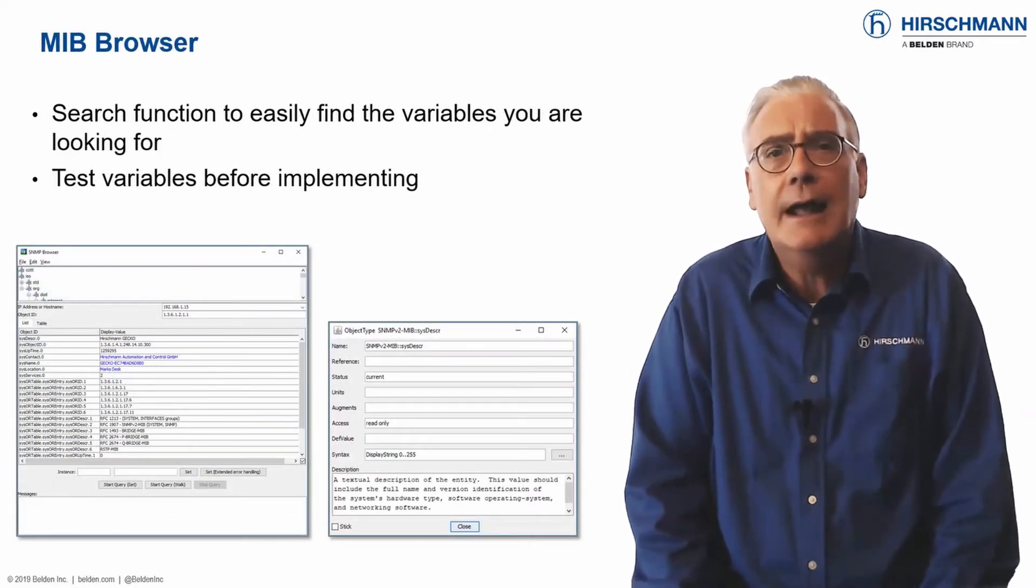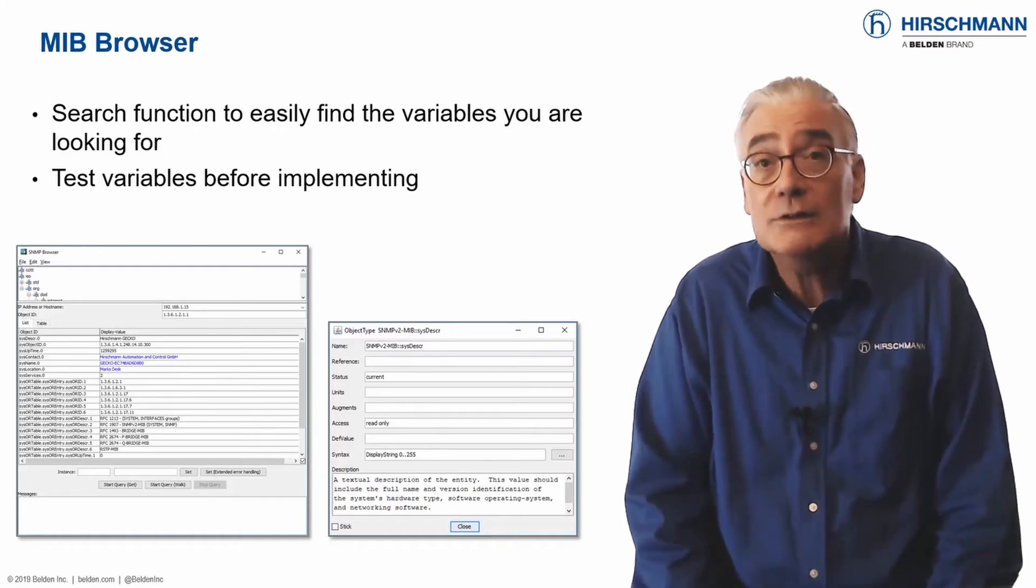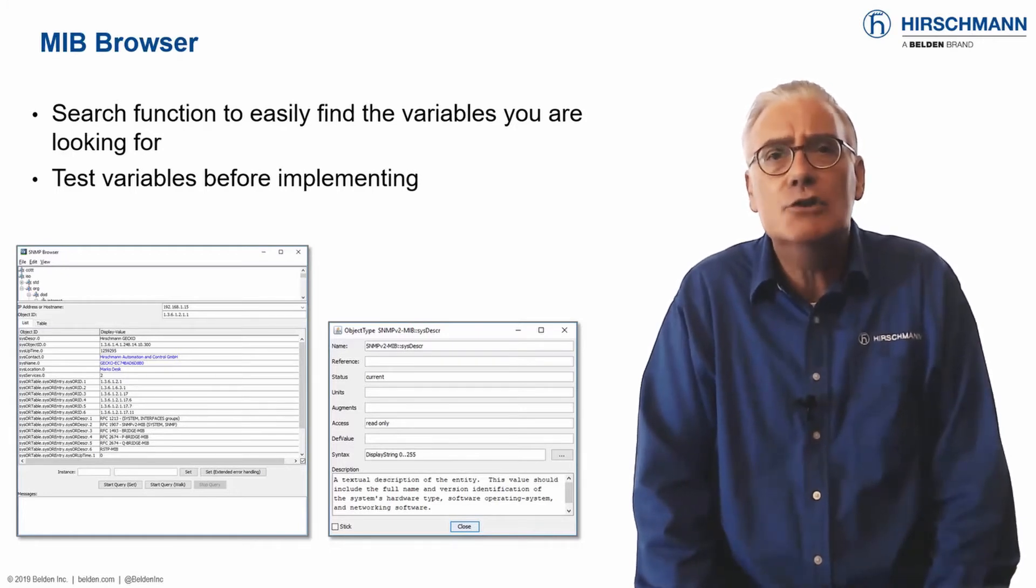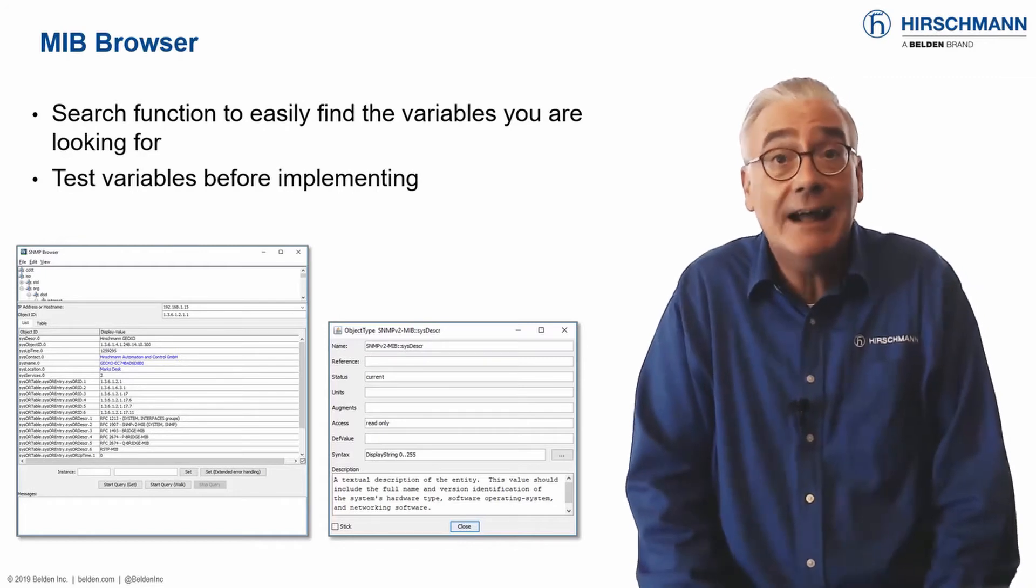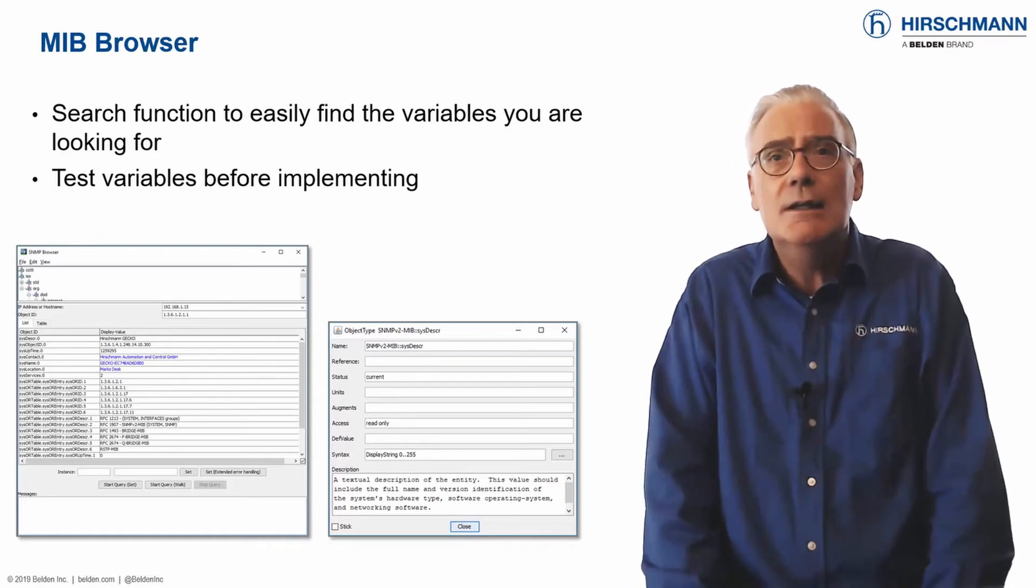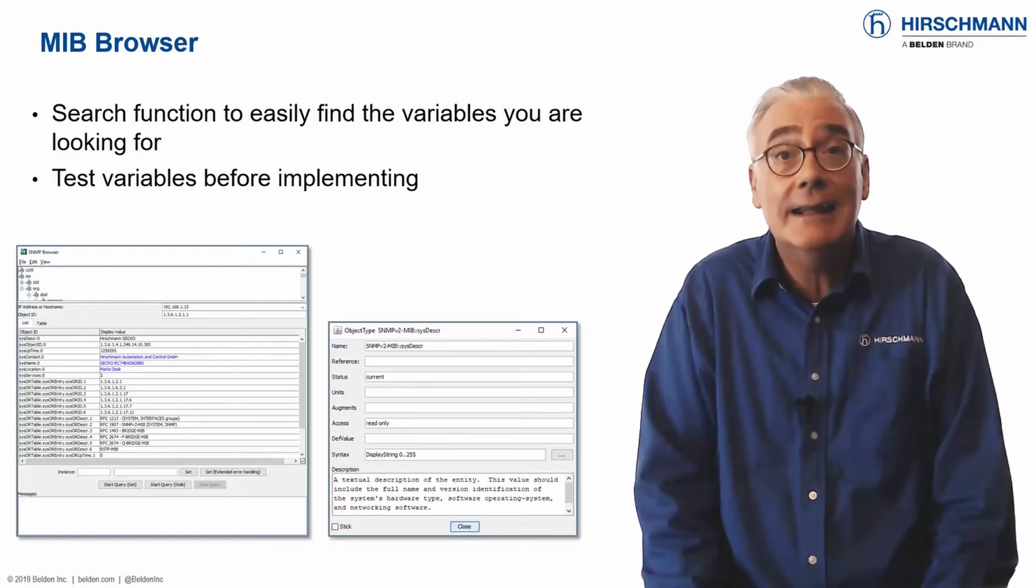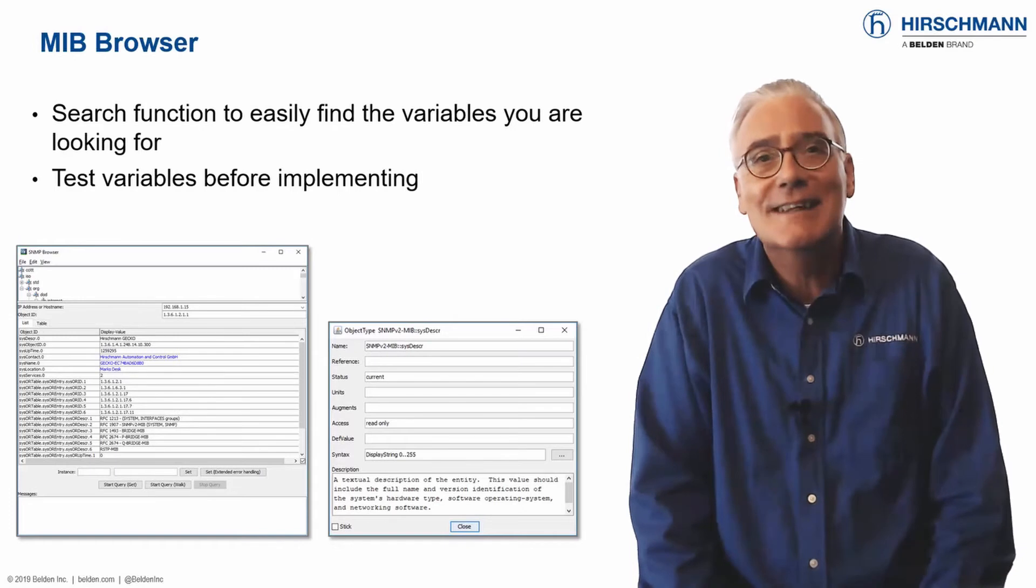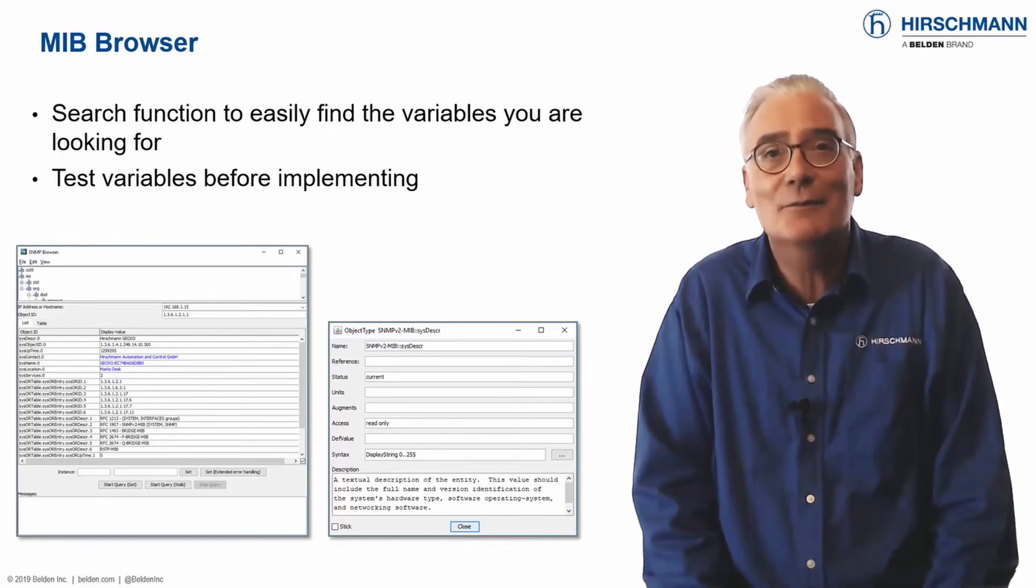The MIB browser allows you to look directly at raw MIB information without going through a graphical user interface. There are several reasons you might want to do this. Fault finding the SNMP stack of an SNMP enabled device is a typical use. Searching for manufacturer-specific information to include in Industrial HiVision is another. But for many of us, curiosity about how SNMP works is the main driving force.